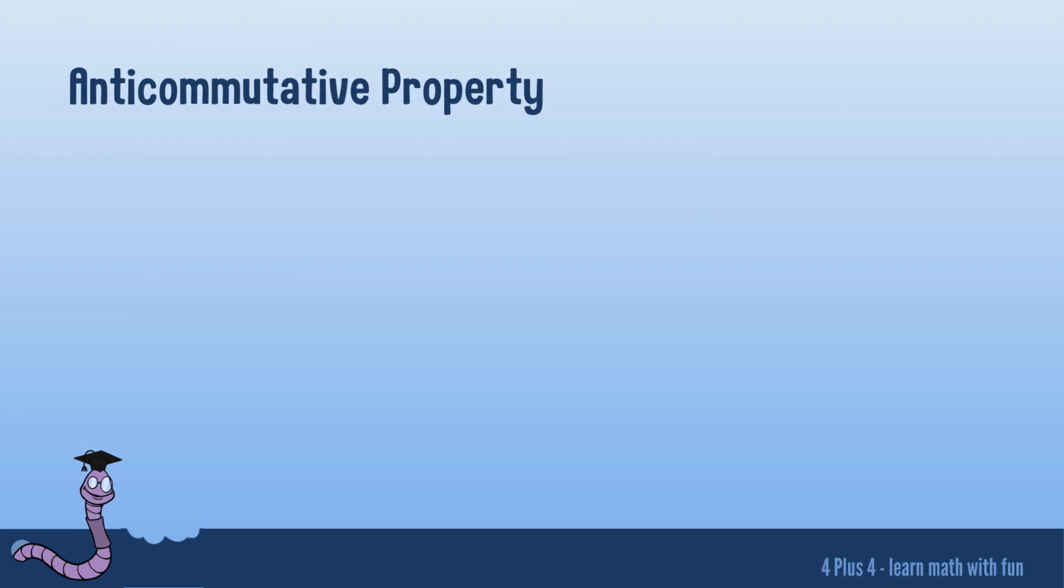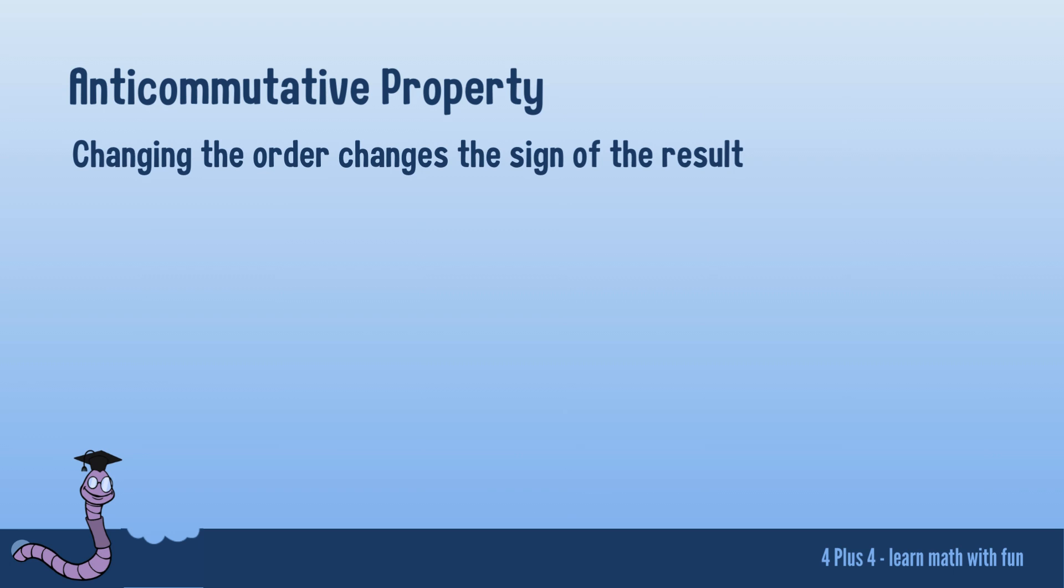Now, let's delve into the concept of anti-commutativity. This term might sound complex, but it's quite simple. If you change the order of two numbers you want to subtract, only the sign of the answer will change. What does that mean? If you subtract 4 from 9, you get 5. Now, if you flip it and subtract 9 from 4, your result will be minus 5.